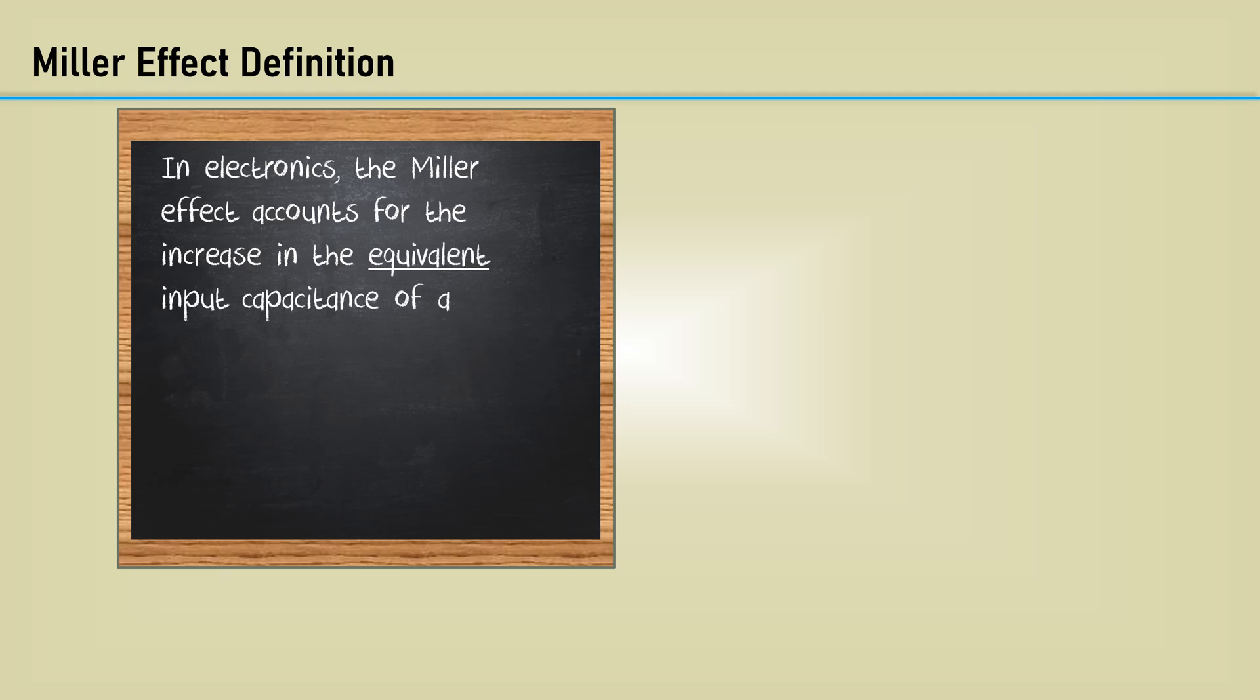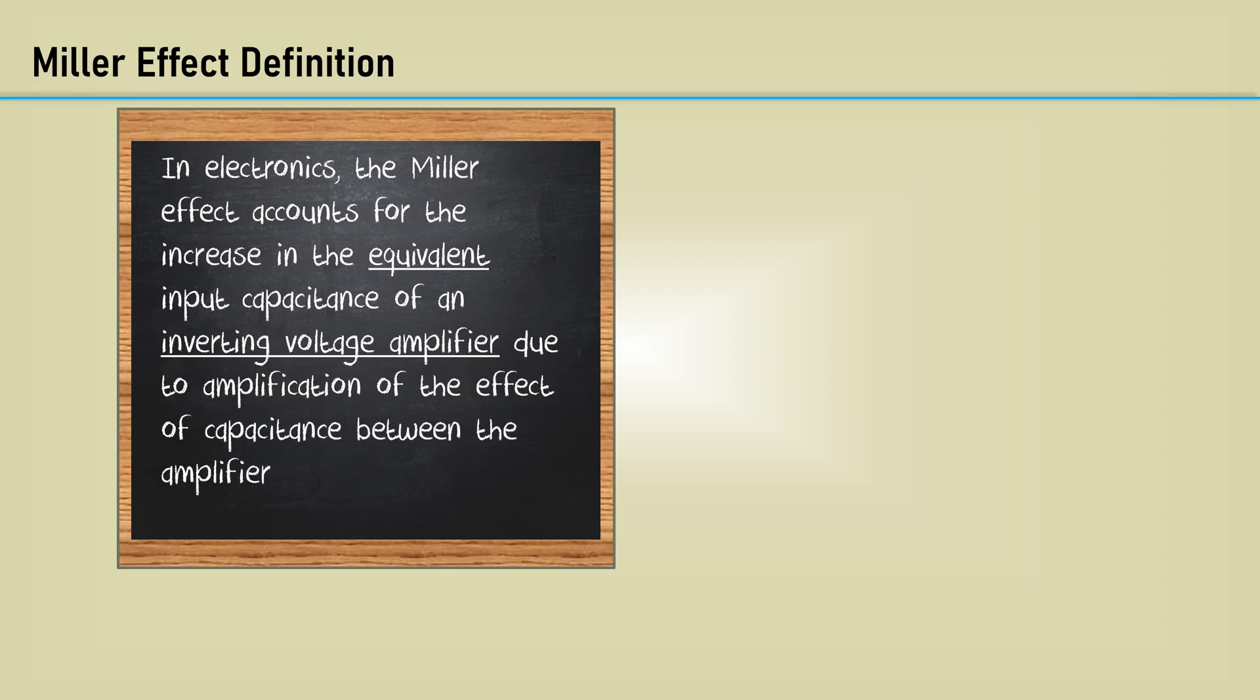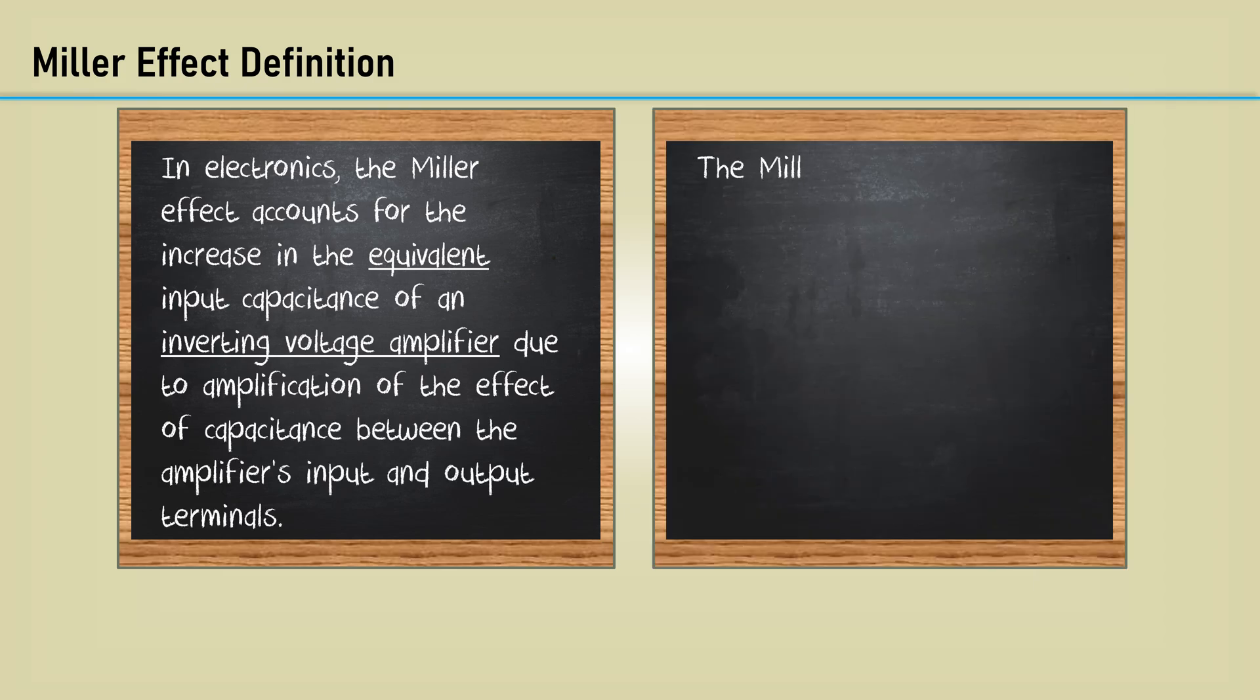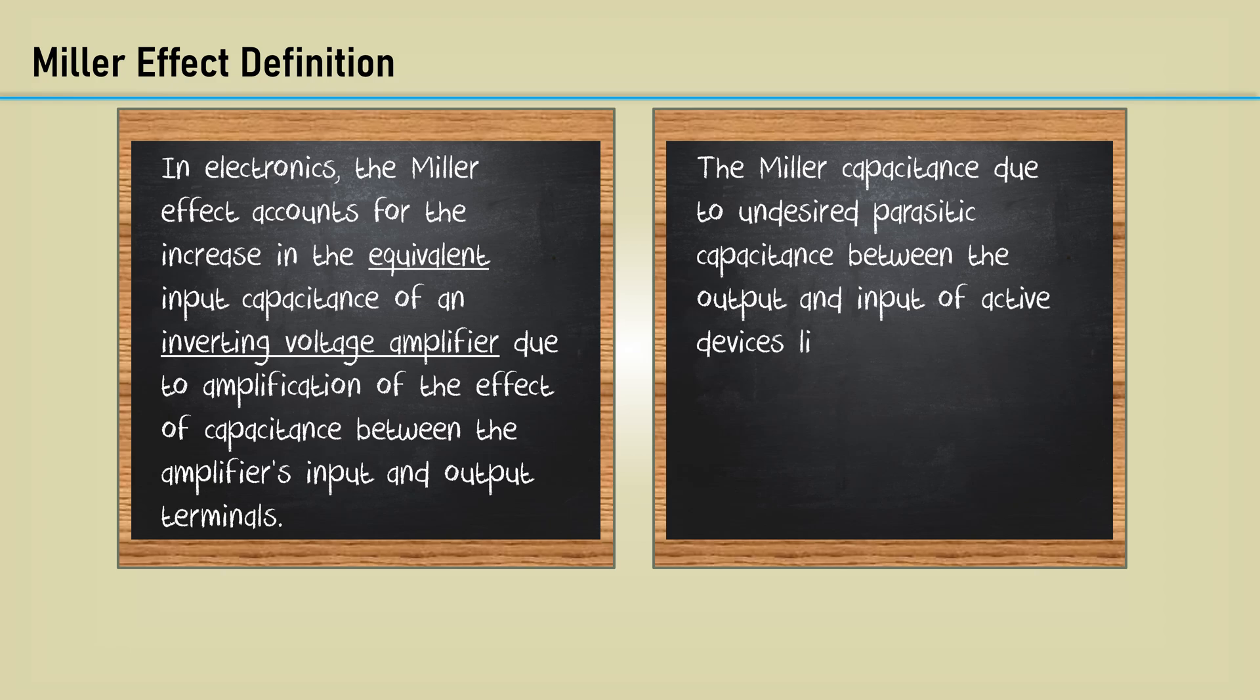Now for the definition of the Miller effect. In electronics, the Miller effect accounts for the increase in the equivalent input capacitance of an inverting voltage amplifier due to the amplification of the effect of capacitance between the amplifier's input and output terminals. The Miller capacitance, due to undesired parasitic capacitance between the output and input of active devices like transistors and vacuum tubes, is a major factor limiting their gain at high frequencies.